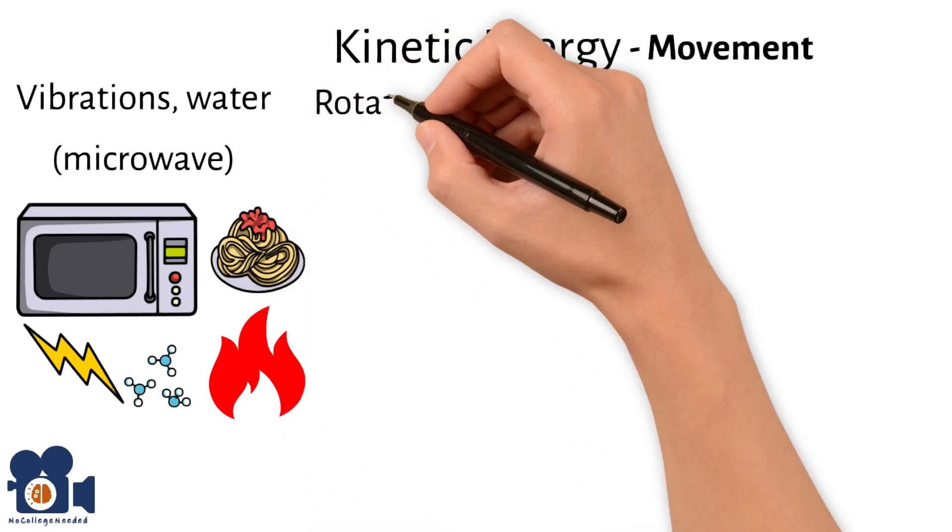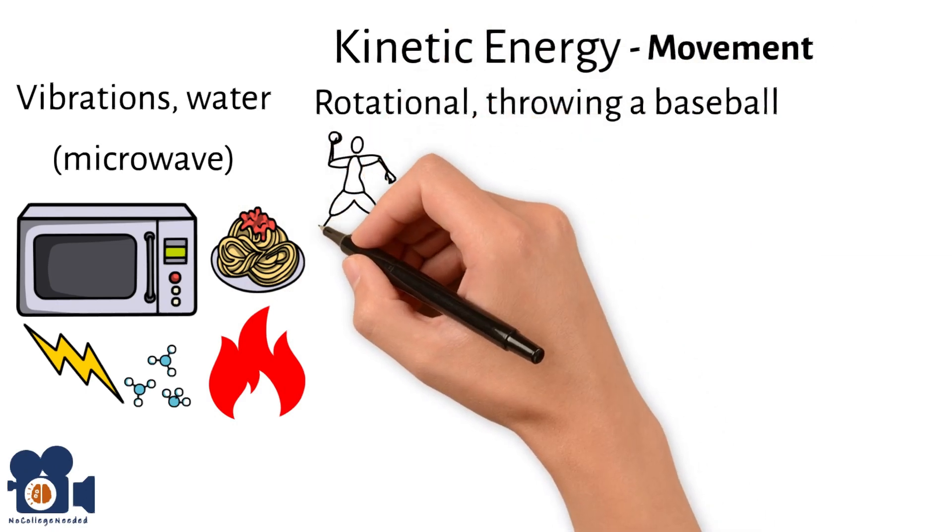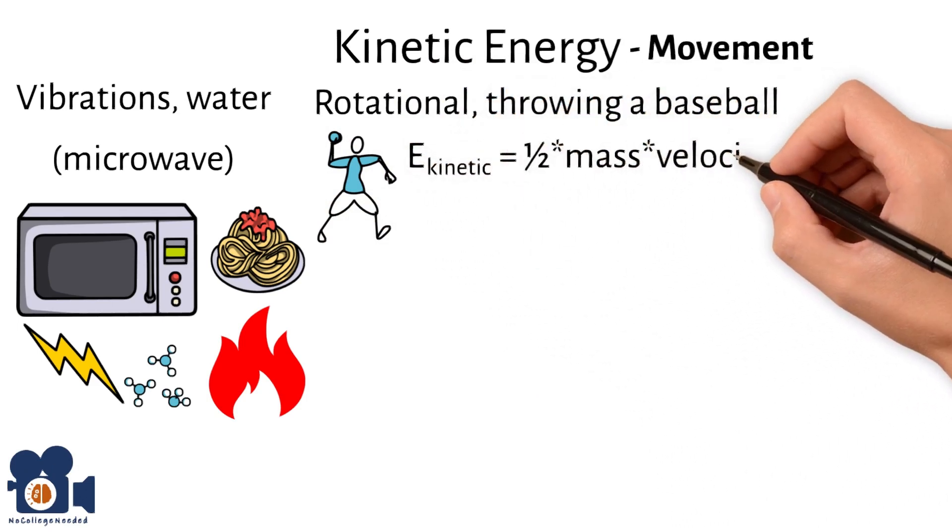The other is rotational movement like a baseball being thrown. We can measure the amount of kinetic energy an object like a baseball has with the equation E kinetic equals one-half mass times velocity squared.